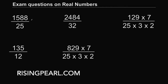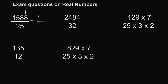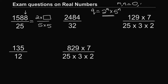Now let's solve the five problems. The first one: the numerator ends with 8, so it is even, and the denominator is 5 times 5. The denominator is clearly in the form 2^m times 5^n. Since m and n can be zero, we can think of this as 2^0 times 5^2. So this decimal expansion will terminate.